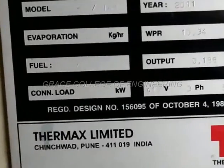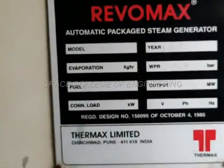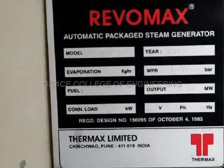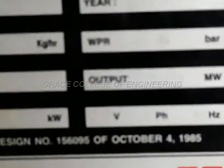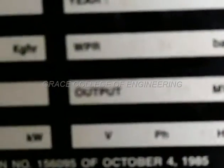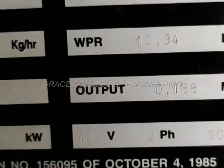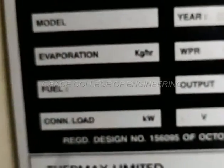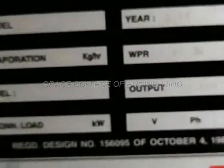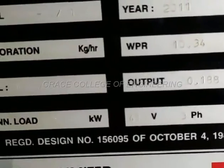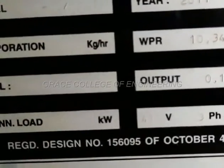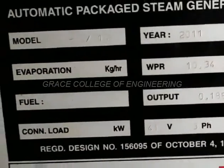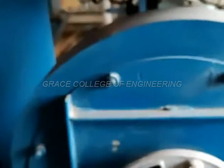Capacity and specification of the boiler: the output is 188 kilowatts. The boiler is operated at 410 volts and 50 hertz. These are the specifications of the boiler.